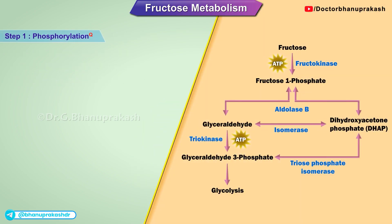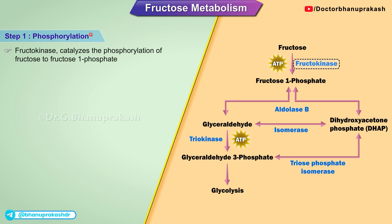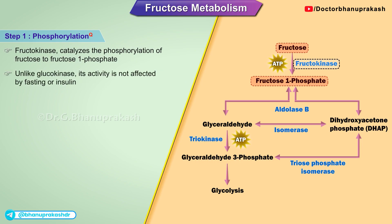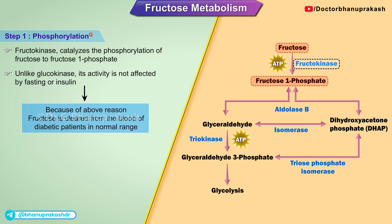Step 1: Phosphorylation. Fructokinase catalyzes the phosphorylation of fructose to fructose-1-phosphate. Unlike glucokinase, its activity is not affected by fasting or insulin, which explains why fructose is cleared from the blood of a diabetic patient in the normal range. One ATP is used.